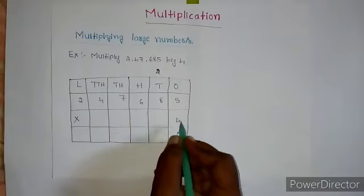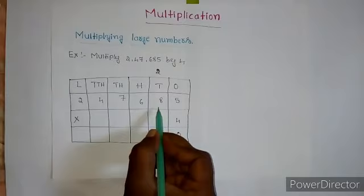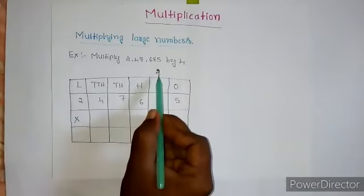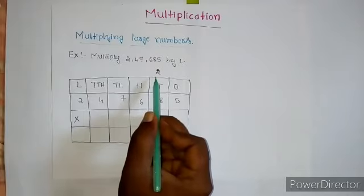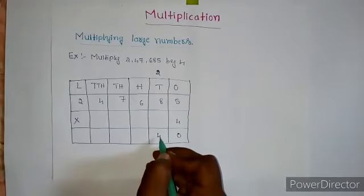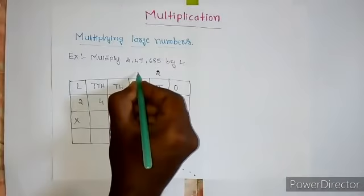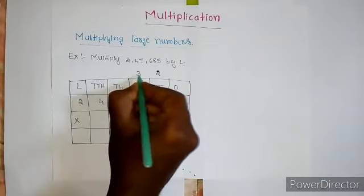Next, we move to the tens column and multiply and add the carried over number. I am going to take carry to 100 place. Carry is 3.